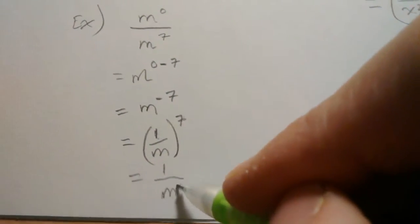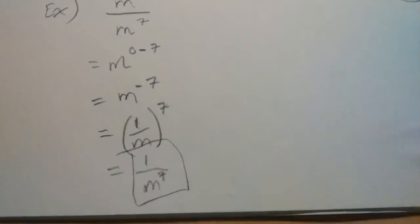And then 7 m's being multiplied, which is m to the 7th. So there we are.